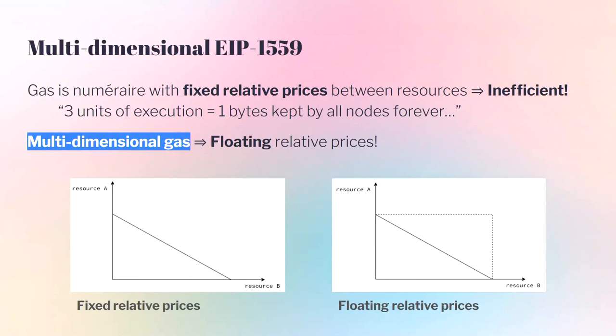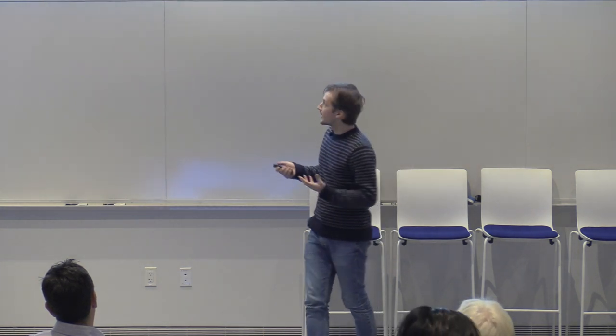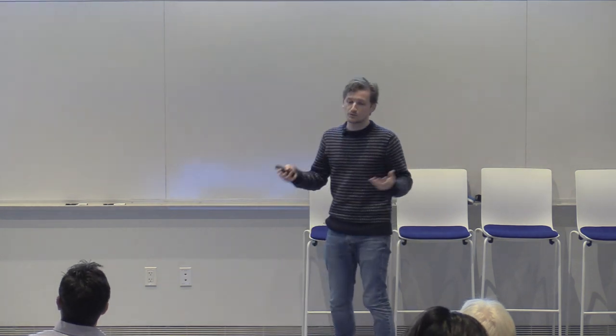EIP-1559 has really achieved its objectives of providing a protocol price. One issue with gas more generally is that it's like a unit of measure where the relative prices of bandwidth, storage, and compute are fixed by a schedule made in 2014 and rarely updated since. This creates oddities — what does it mean that three units of execution equals one byte of permanent historical storage? Having these fixed prices is not just weird, it's inefficient: if resource A and resource B don't compete, fixed pricing forces a suboptimal budget constraint.